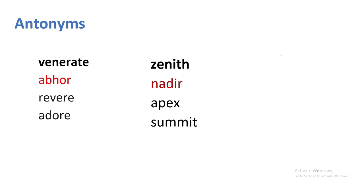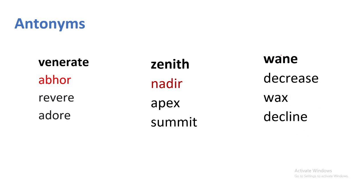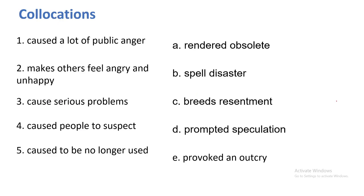Wax and wane — name and fame, success and glory. Wax means to increase, wane means to decrease. The waxing and waning of the moon represents increasing and decreasing. Now pause the video and try matching the options: on the left side numbered one to five, on the right side named A to E — match the left side with the right side.